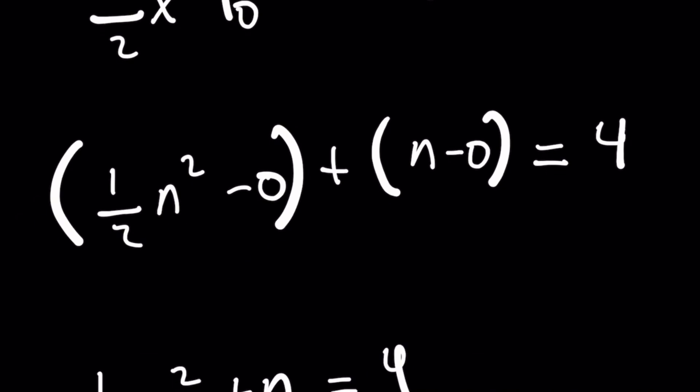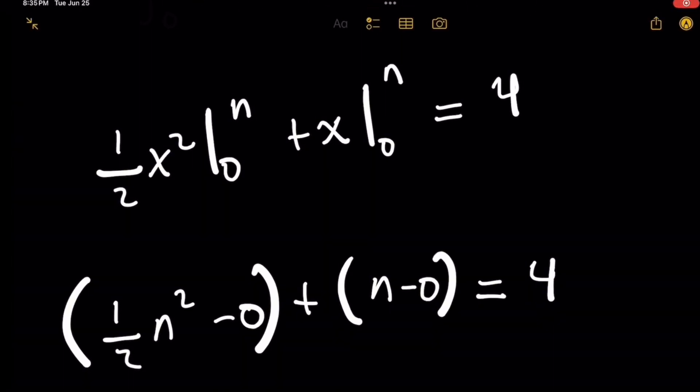So when we plug in n on the left-hand side for 1 half x squared, we'd get 1 half n squared minus plugging in the lower limit of integration. That becomes 0. And repeating this for x evaluated from 0 to n, you'd plug in the upper limit n. And when you subtract the lower limit, you again subtract 0. And this all equals 4.